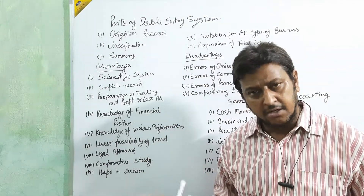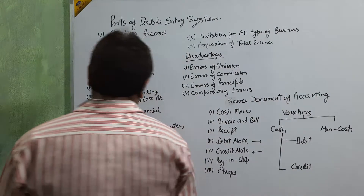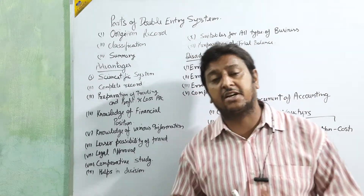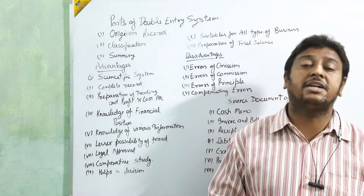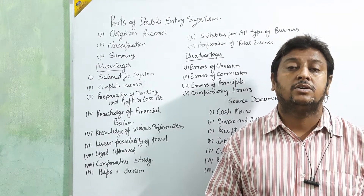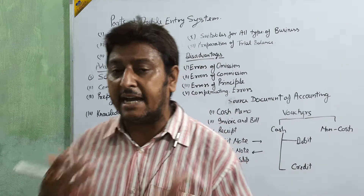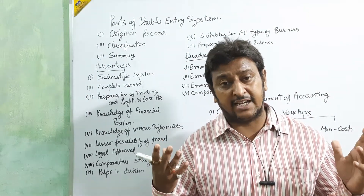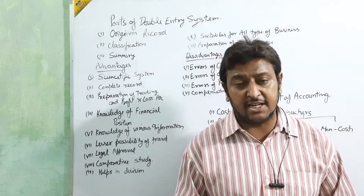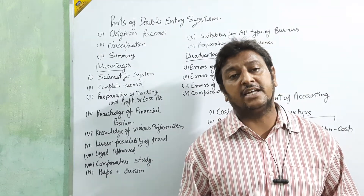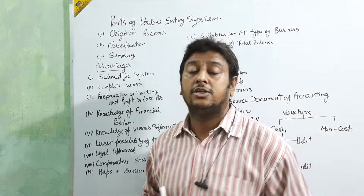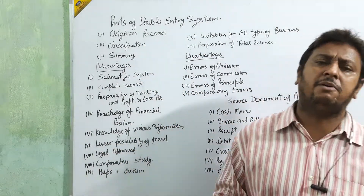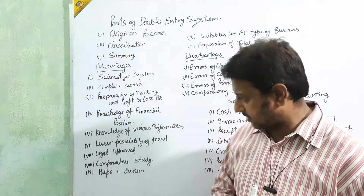Next is knowledge of various information. In the double entry system we can make depreciation accounts, bills of exchange, and more. Using cash flow, fund flow, ratio analysis, and comparative statements, we can obtain many types of information about the business.